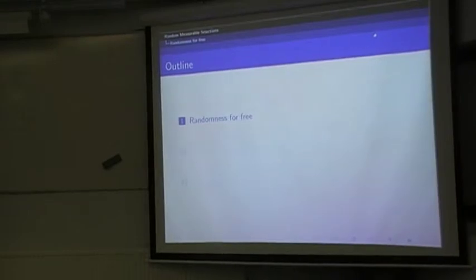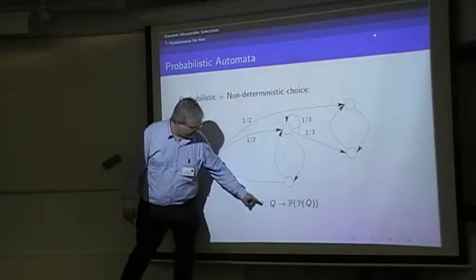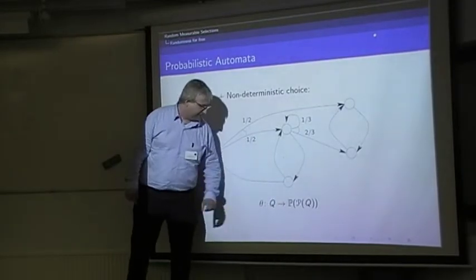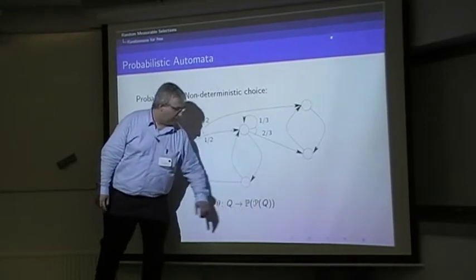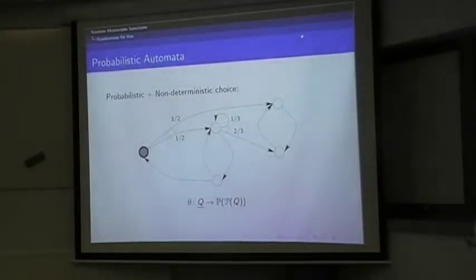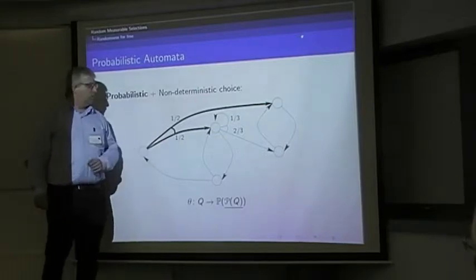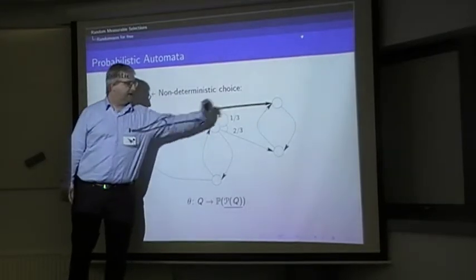Anyway, the question I'm trying to solve here is called randomness for free. This has been called that way since 2010. The general framework is automata which include both non-deterministic and probabilistic choice. Here's a finite case of such an automaton that has a transition function. For those who prefer to read Greek, there's a definition. You've got a transition function from a set of states Q to subsets of sets of probabilities in Q.